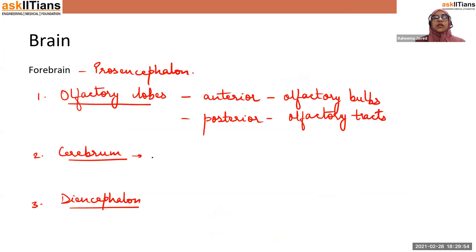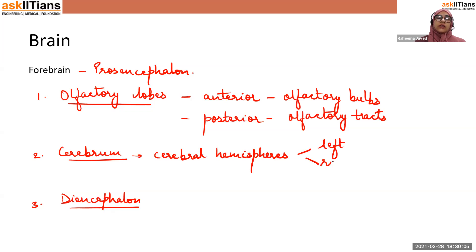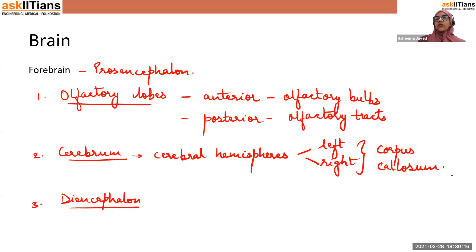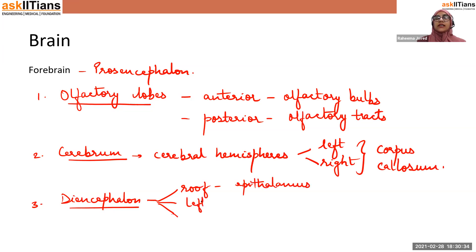The cerebrum consists of the left and right cerebral hemispheres, and both are connected together by a tissue known as the corpus callosum. The diencephalon, on the other hand, consists of a roof — the epithalamus — the thalami on the left and right hand side, and the floor, which is the hypothalamus.